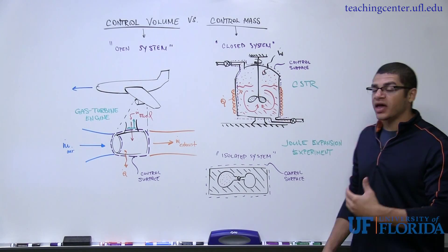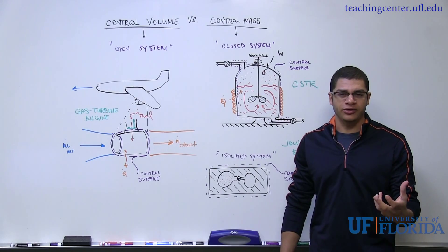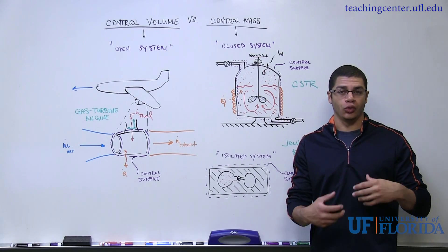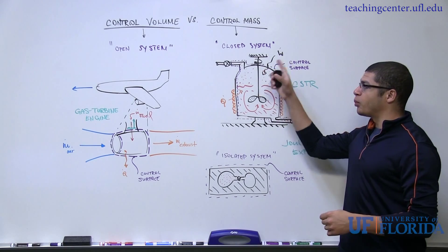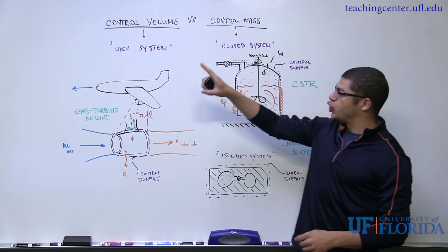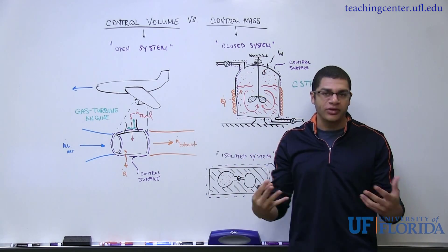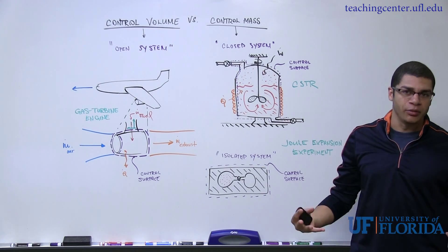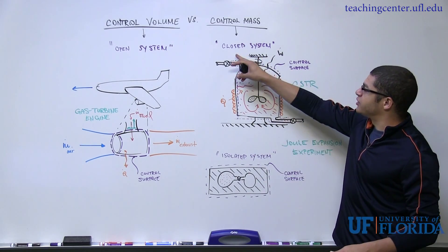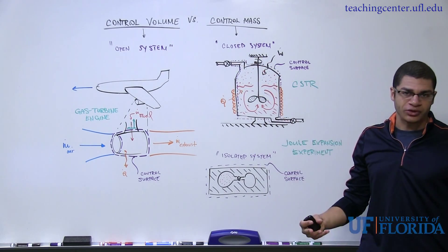In the beginning of any type of thermodynamic analysis, we're going to want to determine whether we're working with a control volume or a control mass. A control volume is synonymous with an open system, which we'll see why in a minute, and a control mass is synonymous with a closed system.